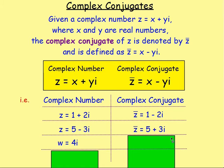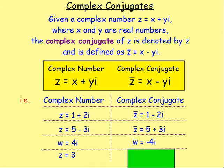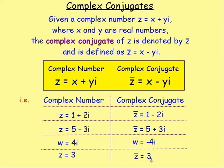If W = 4i, then W̄ = −4i — the real part is 0, and the imaginary part changes sign. If Z = 3, there is no imaginary part, so Z̄ = 3 — it stays the same. This shows it's only the imaginary part that changes sign; real parts stay as they are.